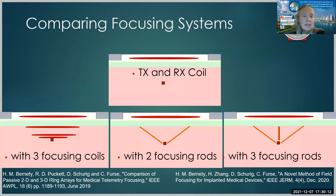So we're going to look at four cases. We're going to look at the transmit and receive coil with no focusing rods. We're going to look at the transmit and receive coil with three focusing coils shown here, and then with two focusing rods and then with three focusing rods. So let's see how these different systems work.